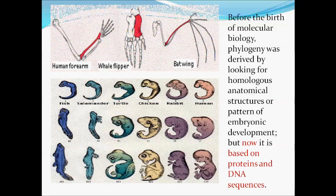Before the birth of molecular biology, phylogeny was derived by looking for homologous anatomical structures or patterns of embryonic development. Now it is based on protein and DNA sequences. This figure shows the bones in the four limbs of three mammals — human, whale, and bat — although used for such different functions as throwing, swimming, and flying, the same basic structural plan is evident in all of them. In each case, the bone shown in color is the radius.